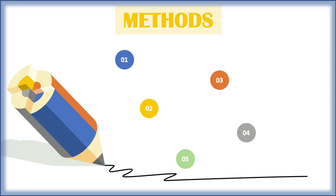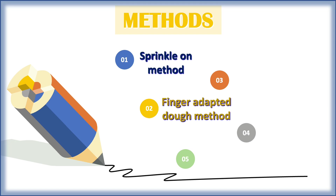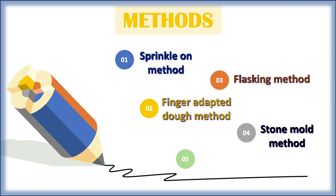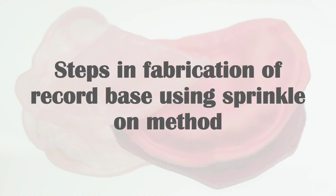Various methods to fabricate a record base using self-cure resin: the most commonly used are the sprinkle-on method and the finger-adapted dough method. We also have the flasking method, stone mold method, and the wax-confined method. The first two are the most commonly used for fabrication of a record base, custom tray, or special tray.